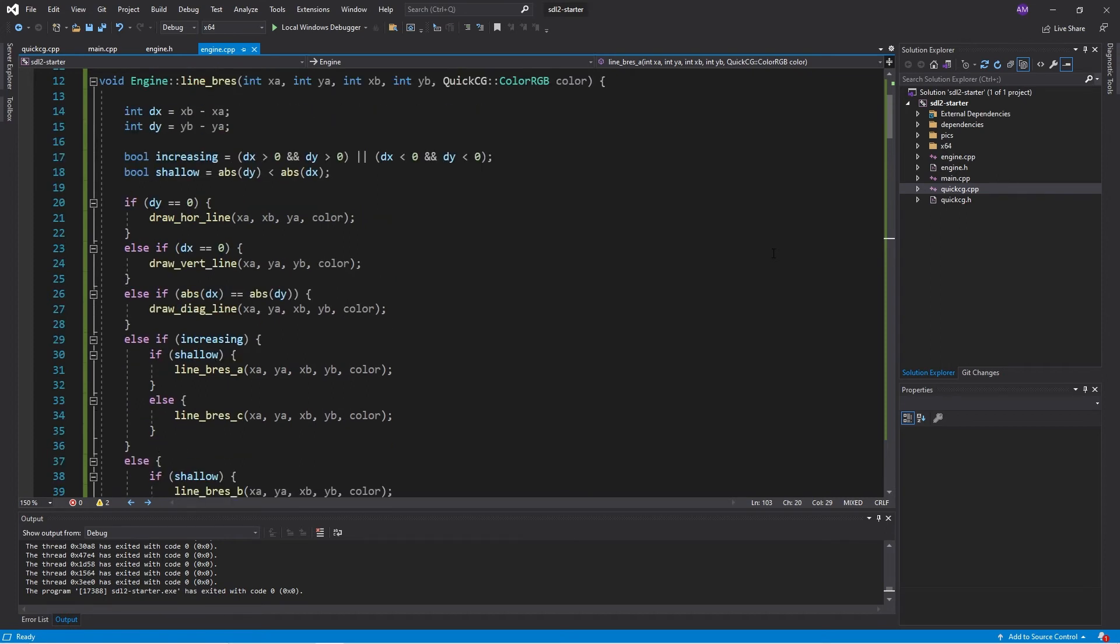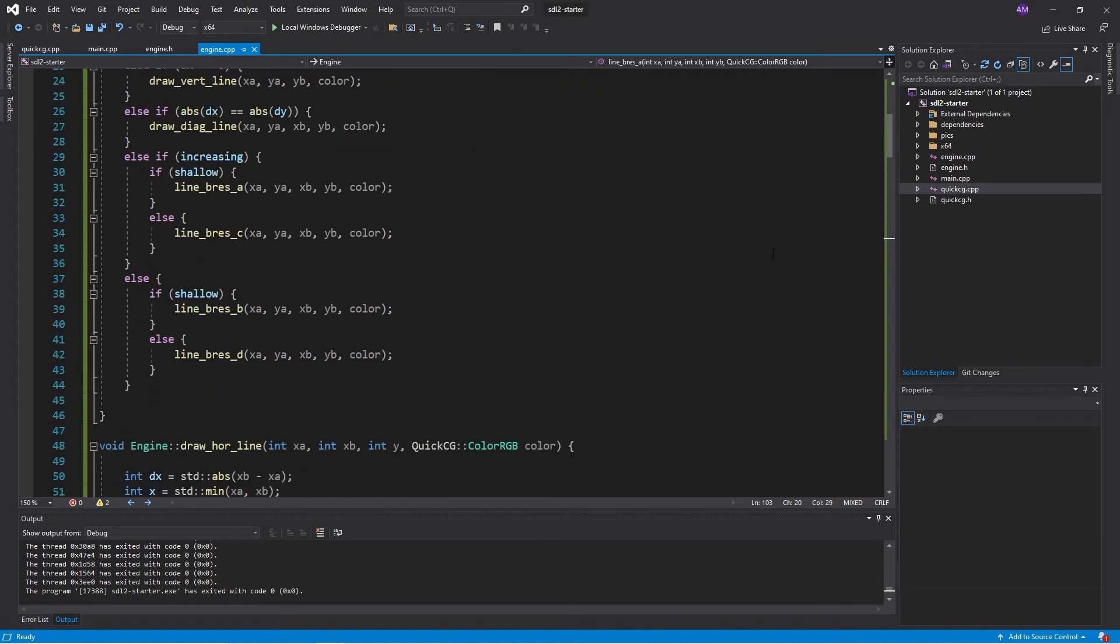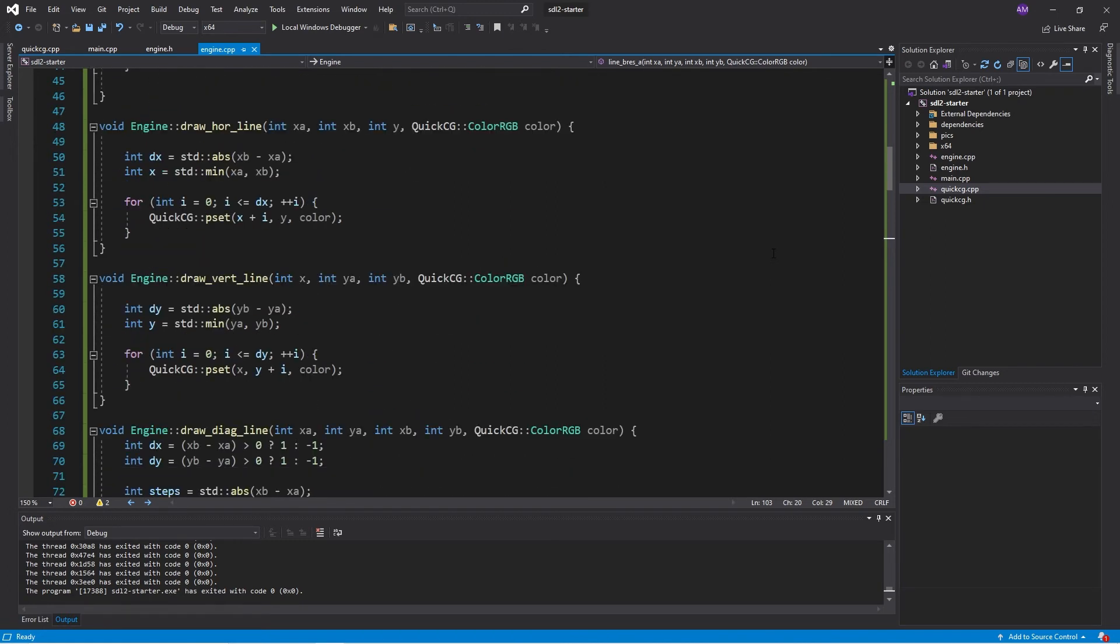First thing we can do is check if we have a horizontal line, so in other words dy is zero, or if dx is zero we'll have a vertical line. These functions behave pretty much as you would expect. We just run in a loop and set pixels. It's very straightforward.